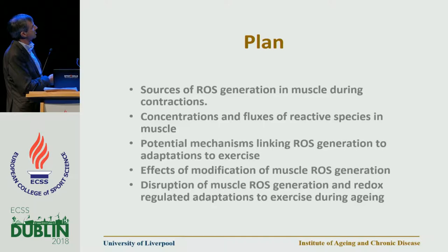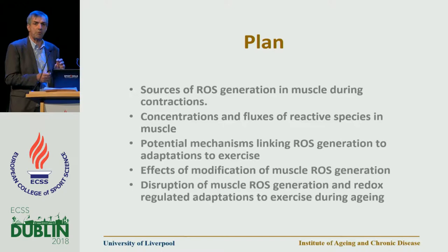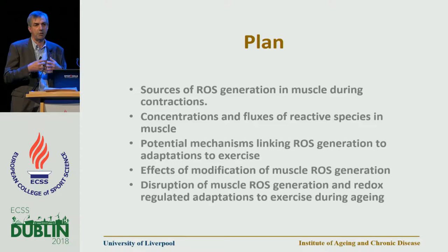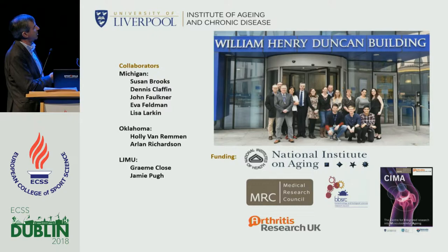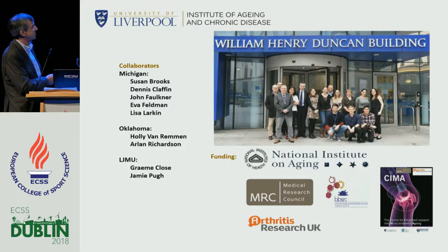That's really the end of my talk. I've talked about sources of reactive oxygen species generation, concentrations, and our problems with how they might be signaling adaptive responses. Looking at how we modify reactive oxygen species generation has led us to identify this intimate link between the motor neuron and the muscle, and how redox cross-talk between these tissues might affect muscle during aging. Thanks to Anne McArdle, Natalie Pollock, our collaborators in the US — Holly Van Remmen, Susan Brooks, Alan Richardson — Graham Close, Jamie Pugh, and our funders.